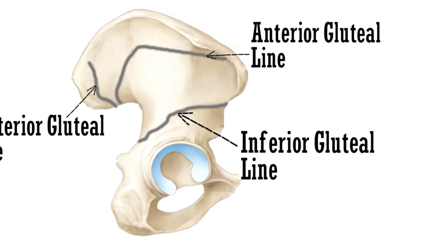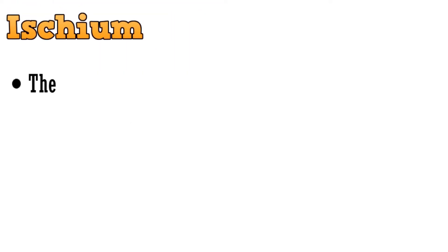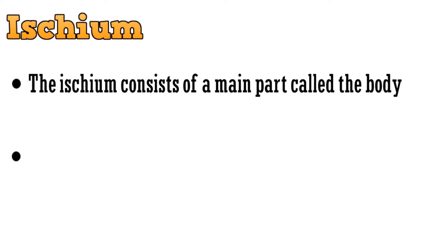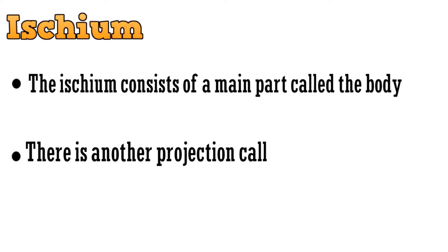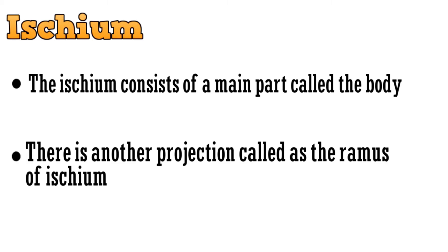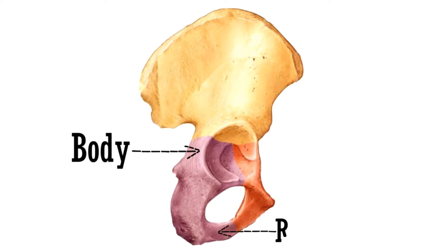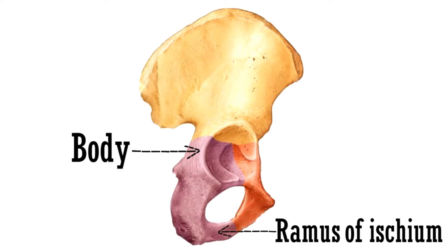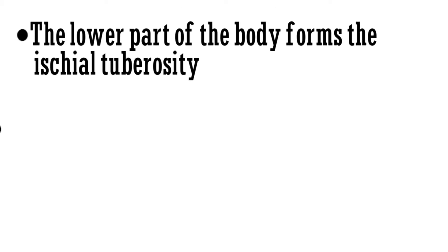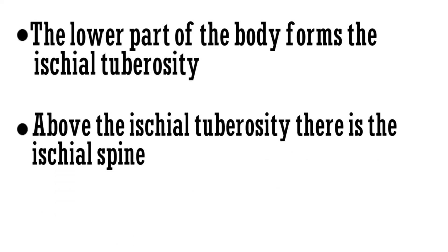With this we complete the ilium and move to the next part, the ischium. The ischium consists of a main part called the body, and a projection called the ramus of ischium. This purple shaded part is the ischium — this is the body of ischium and this lower part is the ramus of ischium. The lower part of the body forms the ischial tuberosity, and above the ischial tuberosity there is an ischial spine.